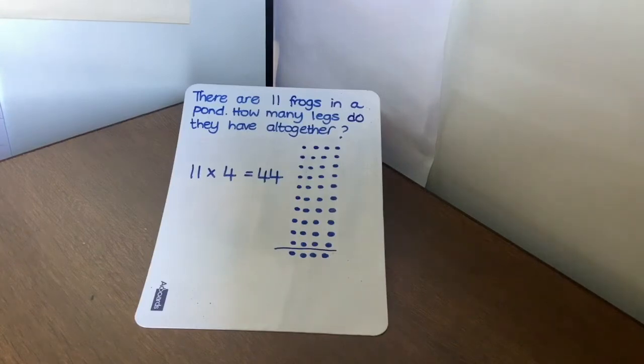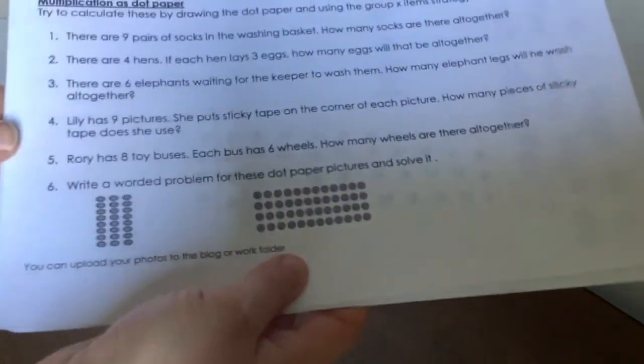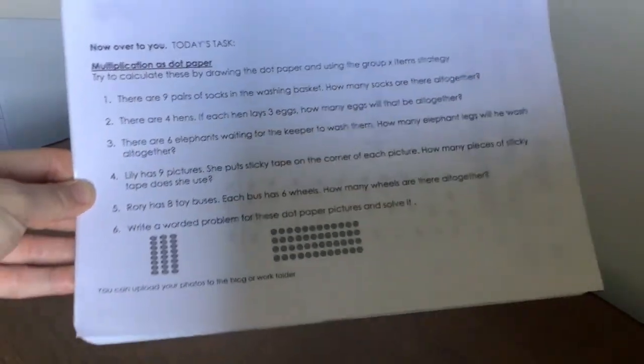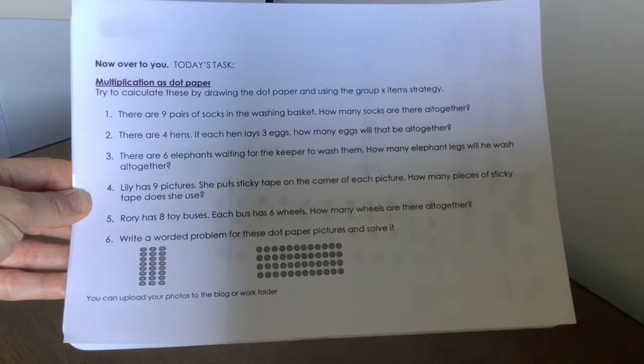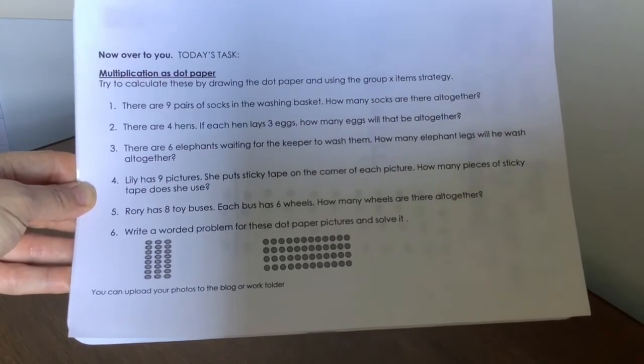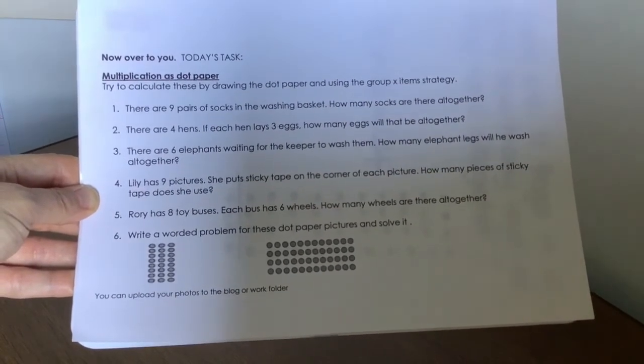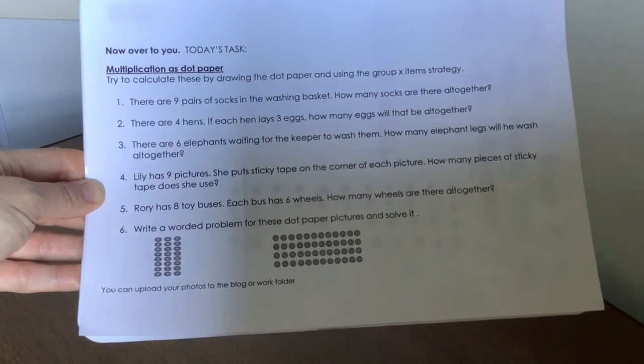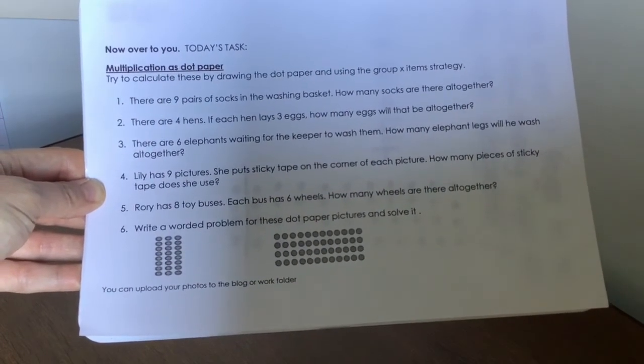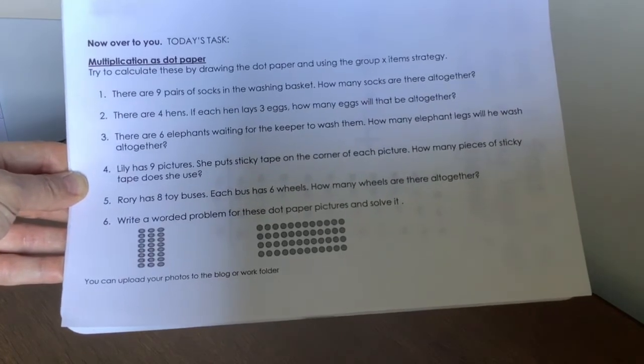Anyway, here's your task for today. Let's see how you get on with this one. So let's have a look at this. Let me hold it up so you can see it. So we've got some questions using our dot paper knowledge. And I want you to try and calculate these, drawing the dot paper and writing the calculation. So the group times the item strategy. And show me what your total is.